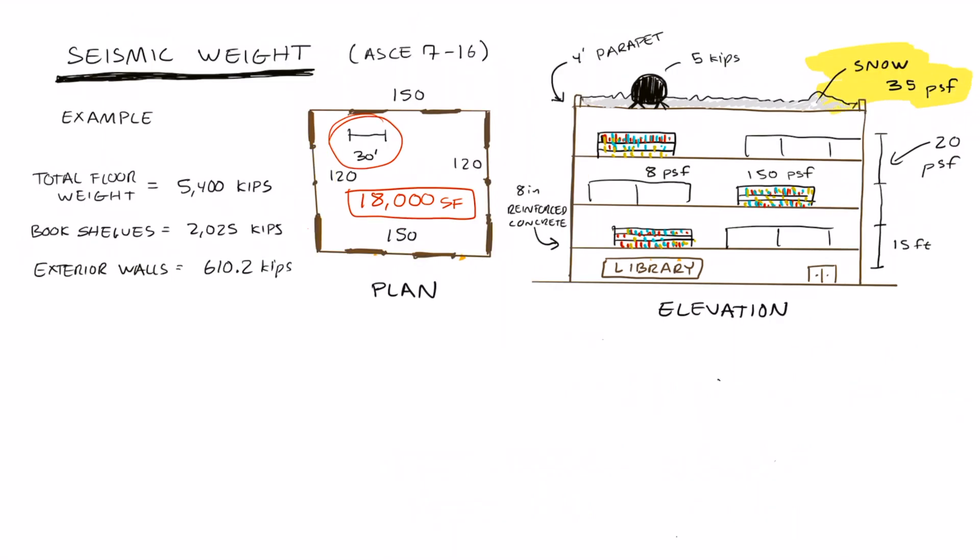The last thing we have to consider is the snow load and the weight of the equipment on the roof. For the snow load, we'll take 20% of the weight of the snow. We'll multiply that by the square footage of the roof, 18,000 square feet, which is 126 kips. The weight of the equipment on the roof is just added to the total weight.